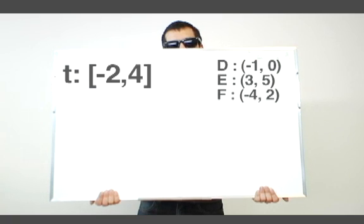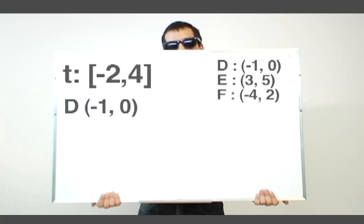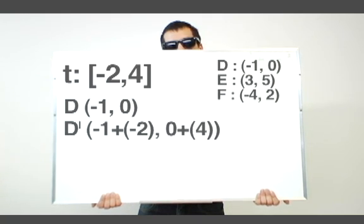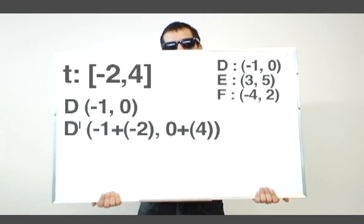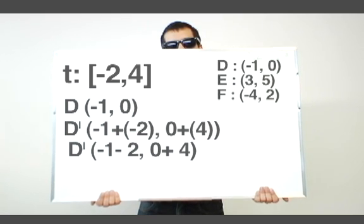Let's start with D. To find D', we add the translation to the original point D. D equals (-1, 0). Therefore, D' equals -1 plus -2, and 0 plus 4. We then simplify it. D' equals -1 minus 2, and 0 plus 4. Therefore, our final D' is (-3, 4).